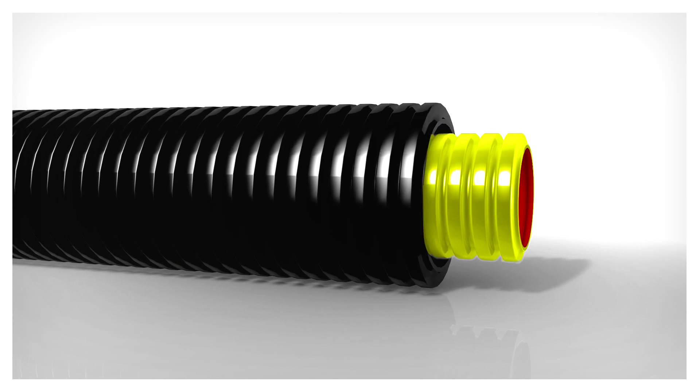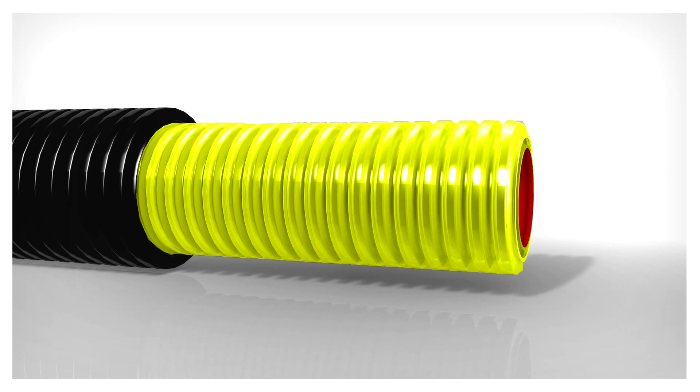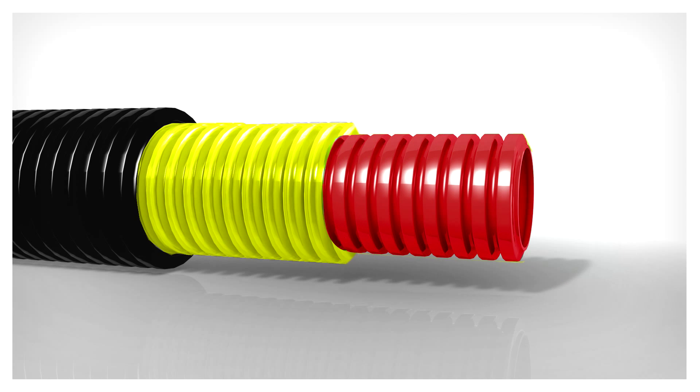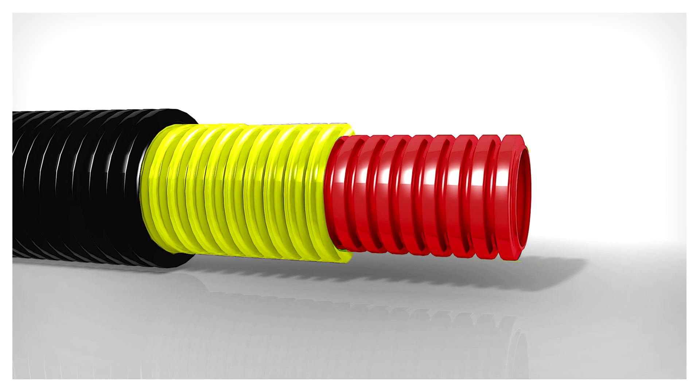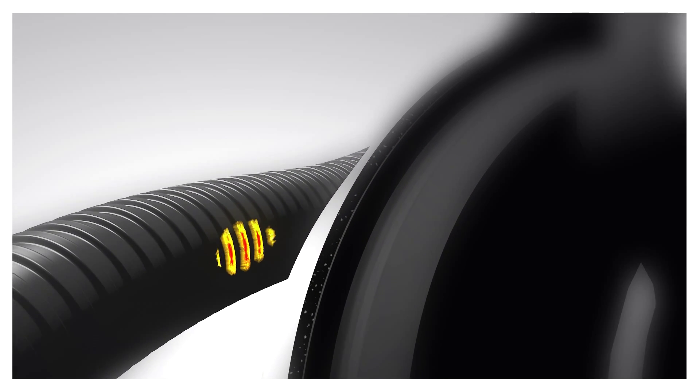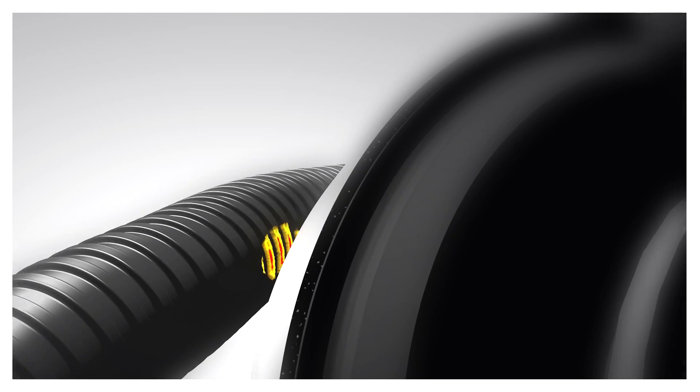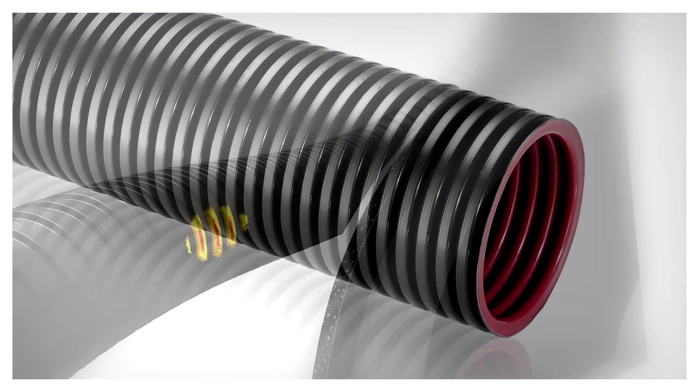The outer layer of the conduit is black. If wear occurs, the yellow layer appears. This allows further usage to be predicted and planned. If the conduit's red layer subsequently appears, a replacement can be arranged in good time.